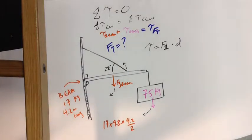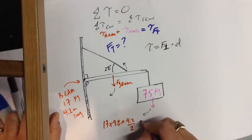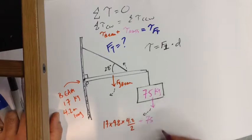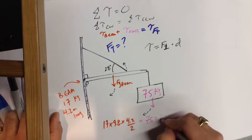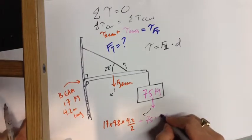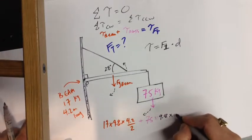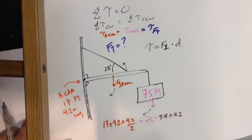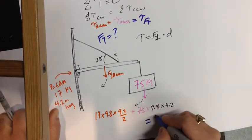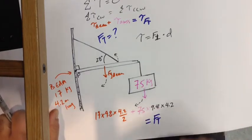So the mass hanging off the end is 75 kilograms times 9.8, and I'm going to have to change colours, times 9.8 times the full 4.2 metres. And that's going to be balanced by the torque of the tension force.